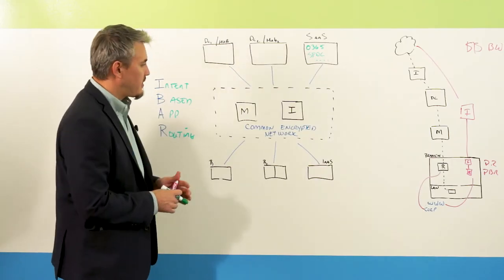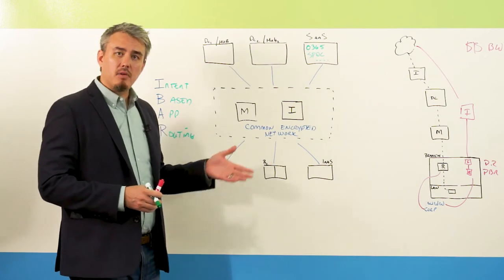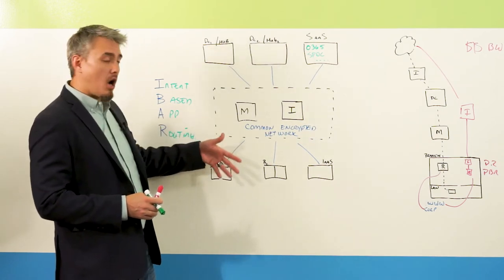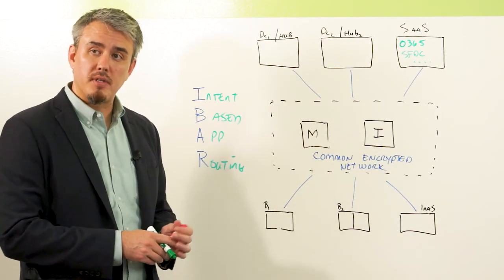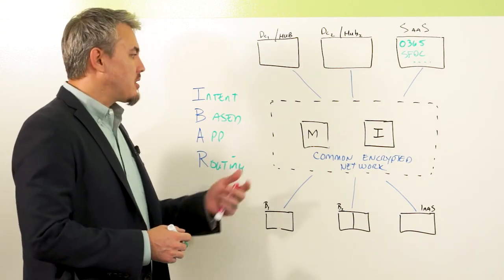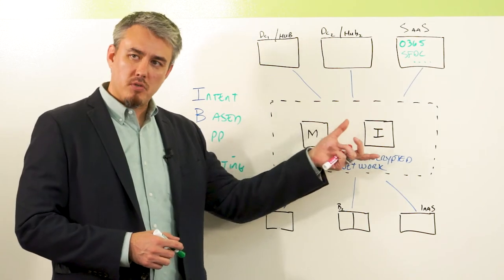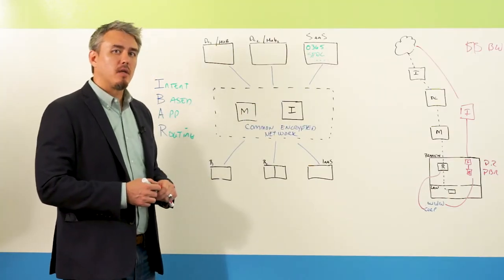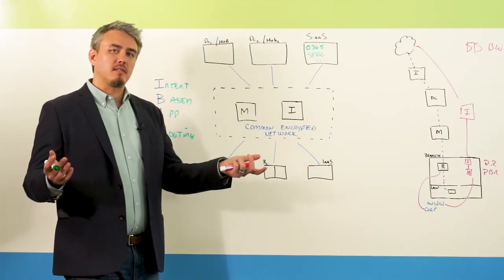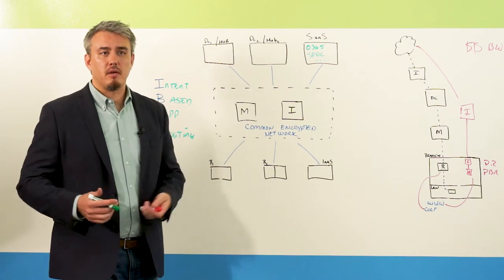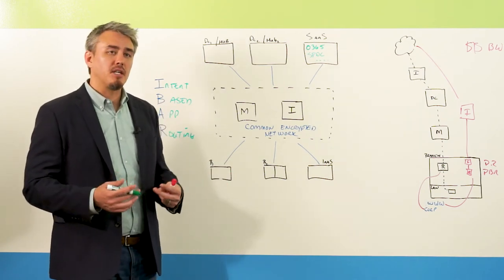What does that mean? It means it's intelligent about the application being utilized across this common encrypted network and is able to look at the behavior and quality of the individual agnostic transports within the network and provide the best quality of experience and the best path for any application that traverses it.